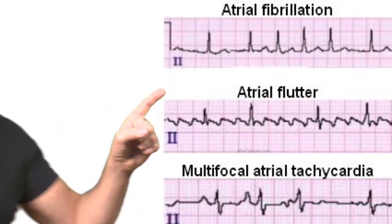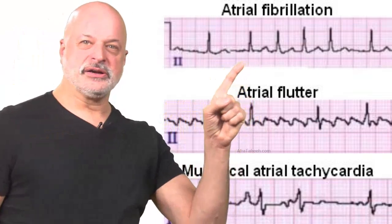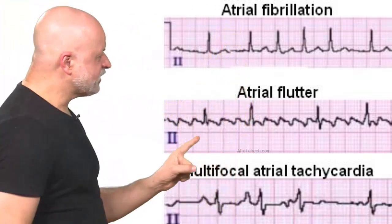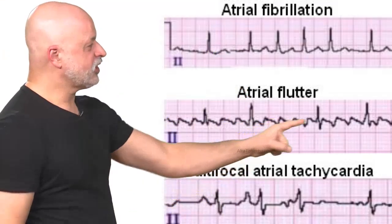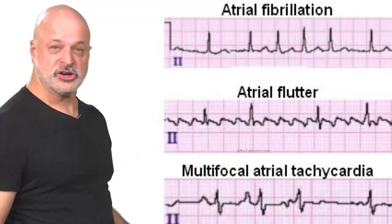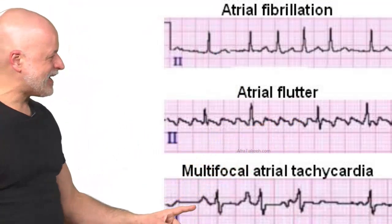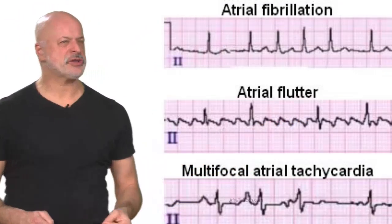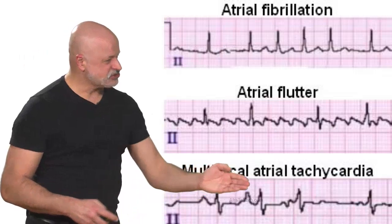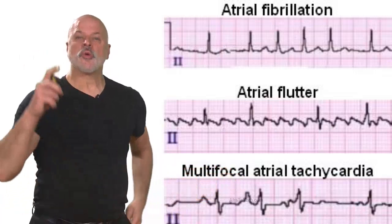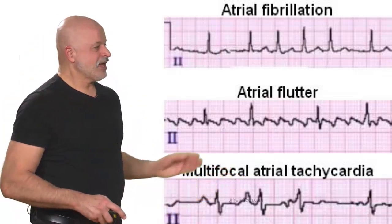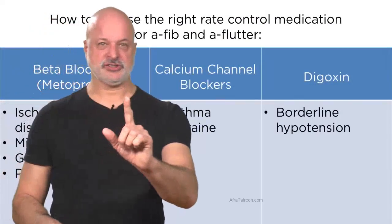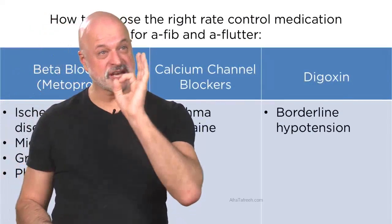In fibrillation: fibrillatory waves are completely irregular and the R-to-R is completely irregular. In flutter: the flutter waves and R-to-R should be regular. MAT is an atrial arrhythmia that happens in association with COPD — it will show multiple P wave morphologies, but there are still P waves in MAT.